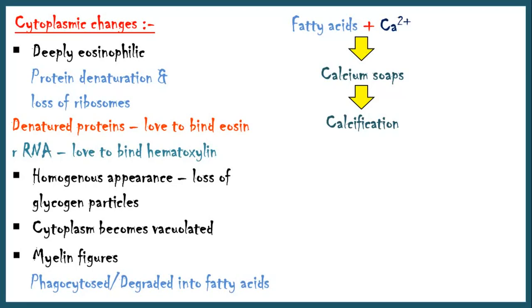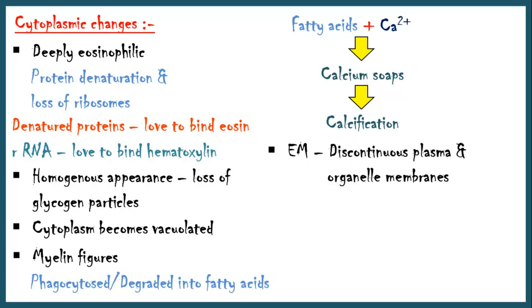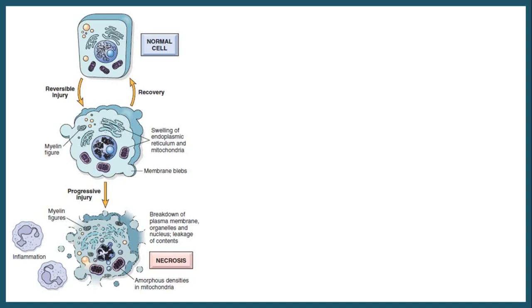By the electron microscope, the necrotic cells can be seen with discontinuous plasma and organelle membranes. This is an image from Robbins' textbook of pathology. In the first stage the cell undergoes reversible injury — at this stage, if the injurious agent is removed, the cell can get back to its normal state. But with progressive injury, the cell undergoes necrosis. Look for the characteristic features we discussed above.